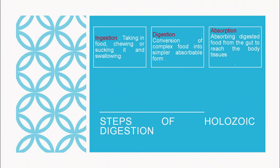Absorption is absorbing the digested food from the gut to reach the body tissues. Once the food has been digested, small molecules have been made — in the case of proteins it is amino acids, in the case of carbohydrates it is monosaccharides, mostly glucose, galactose or fructose, and in the case of fats it is fatty acid and glycerol. They are all absorbed in our small intestine.